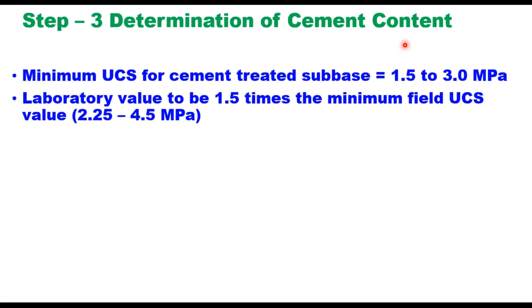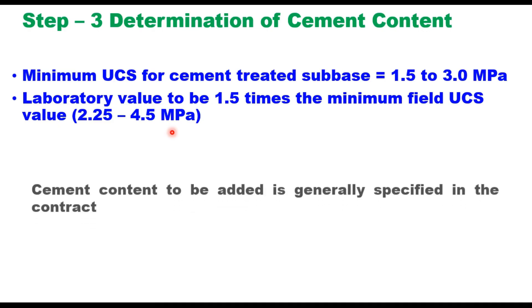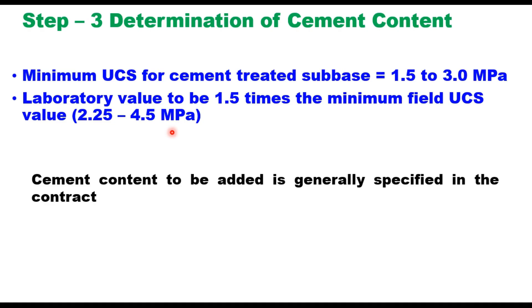Step two is to determine the required cement content, which should be sufficient to provide a UCS of 1.5 to 3 MPa in the field. Since the laboratory value must be 1.5 times the minimum field UCS, the target laboratory value should be in the range of 2.25 to 4.5 MPa. For cement treated subbase material, the cement content is generally specified in the contract and is typically in the range of 3 to 4 percent, commonly 3 percent.